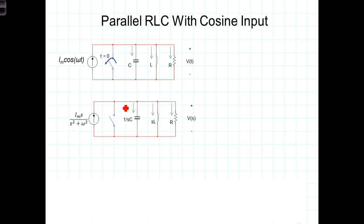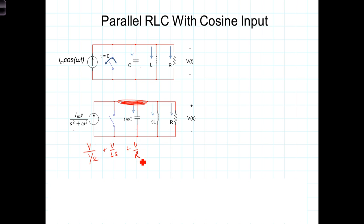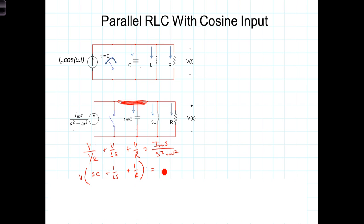Let's start by writing a node equation at the top node, defining the voltage there as V(S). Writing V instead of V(S), we have V divided by 1 over SC — the current down through the capacitor — plus V over LS — the current through the inductor — plus V over R. All of that equals I_sub_M times S over S squared plus omega squared.